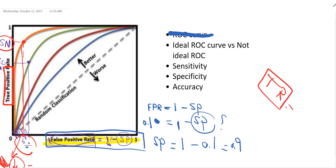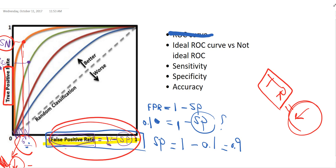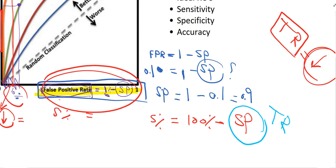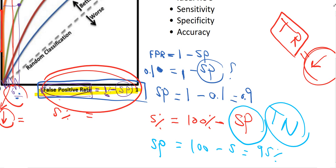Let's apply this with numbers. If the false positive rate decreases from 10% to 5%, apply the equation: specificity equals 100% minus 5%, which equals 95%. So your specificity increases. More sensitivity leads to a lower false positive rate, which means higher specificity.